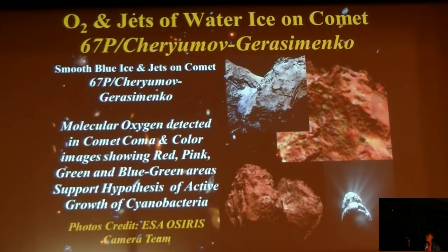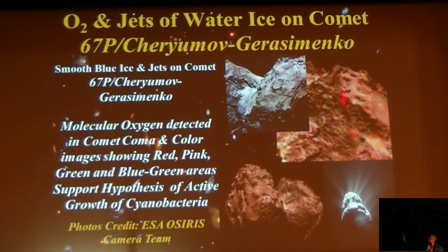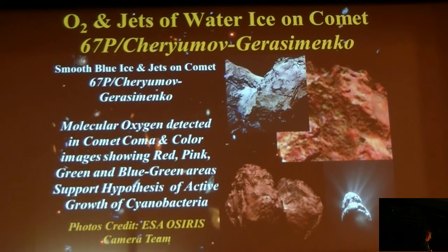Recently, molecular oxygen was detected as the fourth dominant molecule surrounding comet 67P, Churyumov–Gerasimenko. Molecular oxygen was not only detected, but color photographs showed dark blue-green areas and pinks and reds, which could be consistent with microorganisms — primarily cyanobacteria-type organisms, photosynthesizers — growing on and near the surface of comet 67P.